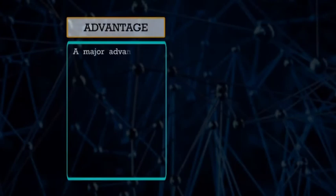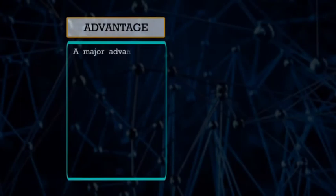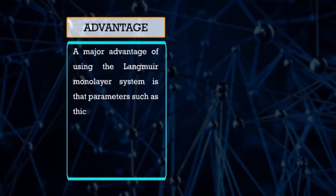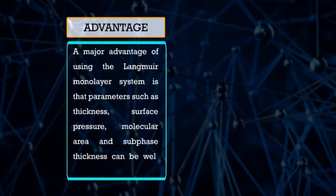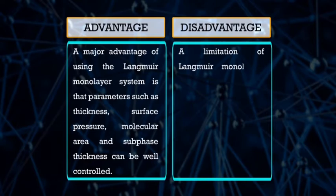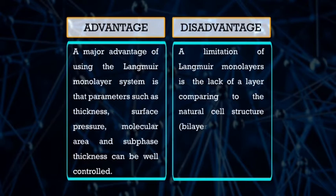This technique is one of the most common approaches used to study membrane protein structure and activity, and has been extensively used for more than a century. Reconstitution of membrane proteins helps obtain further information on their organization and structure in the Langmuir membrane. A major advantage of using the Langmuir monolayer system is that parameters such as thickness, surface pressure, molecular area, and sub-phase thickness can be well controlled. However, a limitation of the Langmuir monolayer is the lack of a bilayer compared to the natural cell structure, and the high surface tension of water can cause protein denaturation.